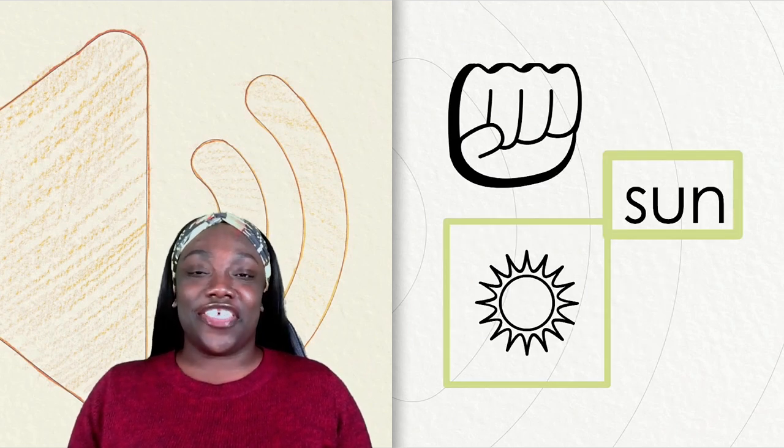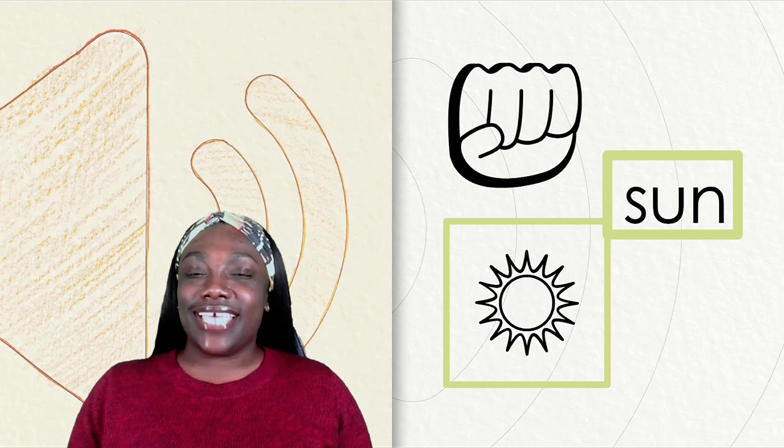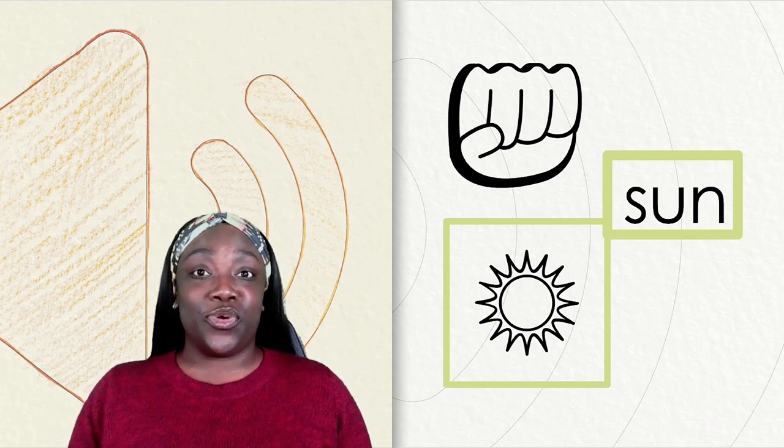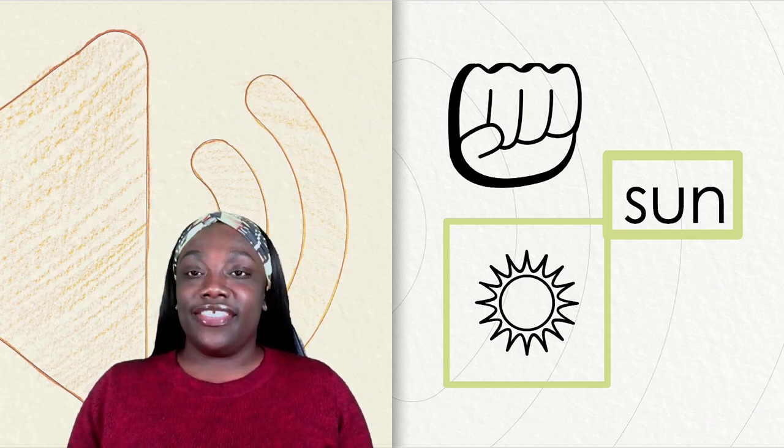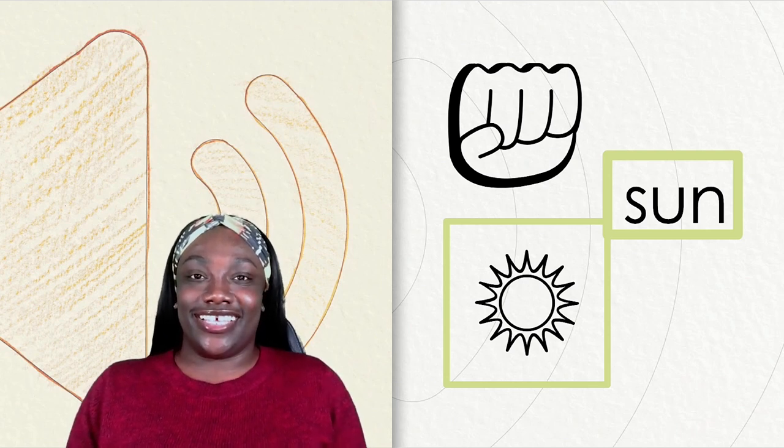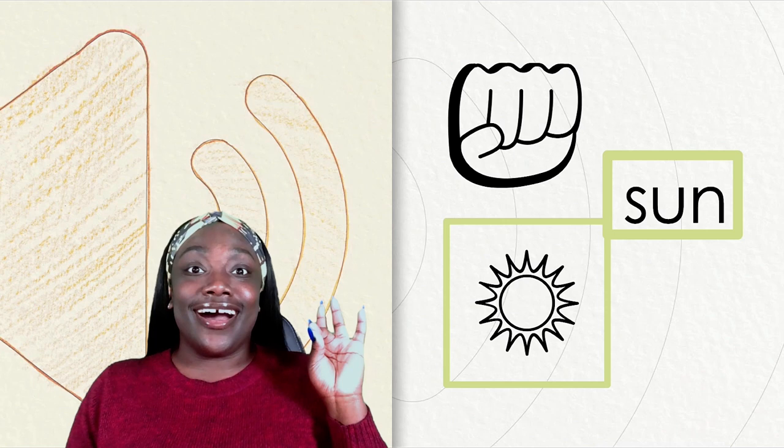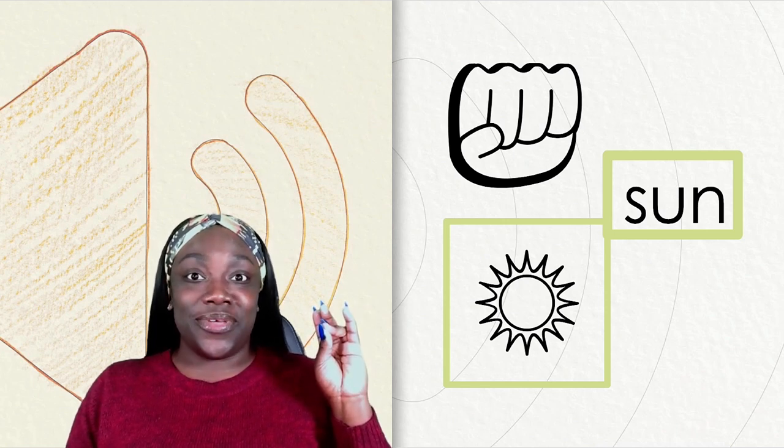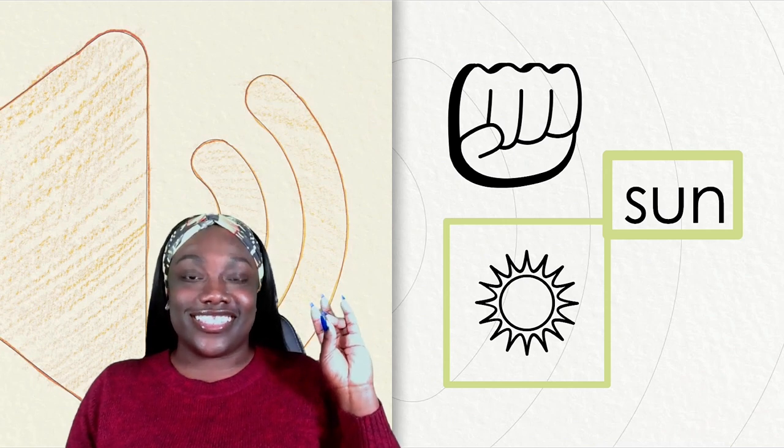Now let's use our thumb and fingers to tap the sounds we hear in some more words. This first word is sun. S, u, n. Try it with me. S, u, n.